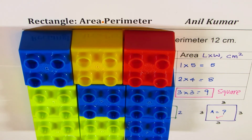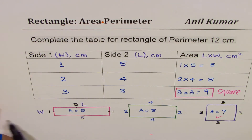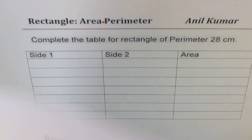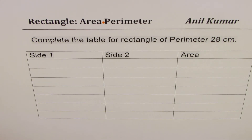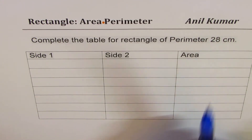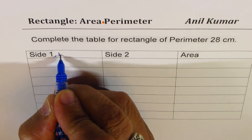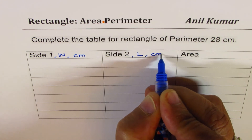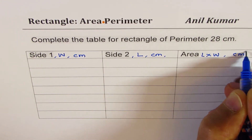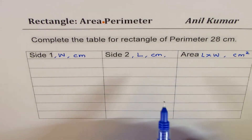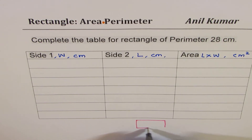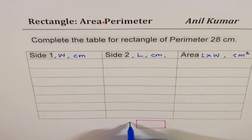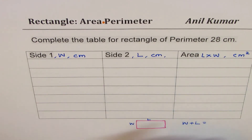Let's move on. This time it's an exercise for you: complete the table where the perimeter is 28 centimeters. Pause the video and try it. Side 1 is width in centimeters, side 2 is length in centimeters, and area is length times width in centimeters squared. To find combinations, first note that width plus length must equal half of 28, which is 14.